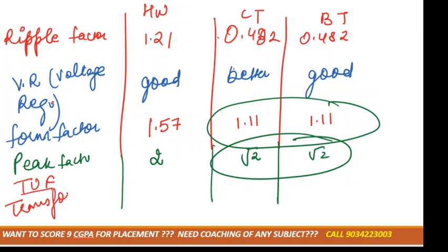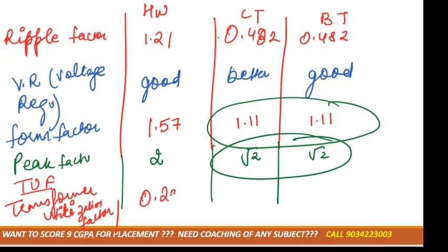Next is the transformer utilization factor, denoted by TUF, which means how much the transformer is utilized. For half wave rectifier it is very less — 0.28. For center tap type, since a transformer is always required, it is 0.692. And for bridge type, it is 0.812.